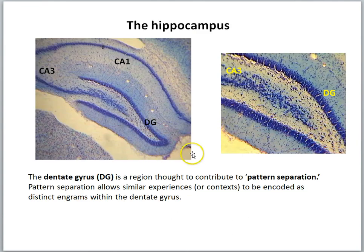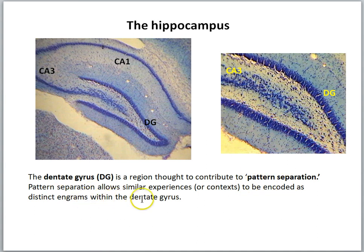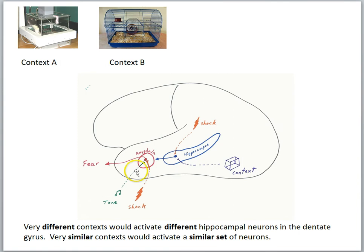The hippocampus has various structural components, one of which is the dentate gyrus — a region thought to contribute to pattern separation. Pattern separation allows similar experiences or contexts to be encoded as distinct engrams within the dentate gyrus. We should expect very different contexts to activate different hippocampal neurons in the dentate gyrus, whereas very similar contexts would activate a similar set of neurons.